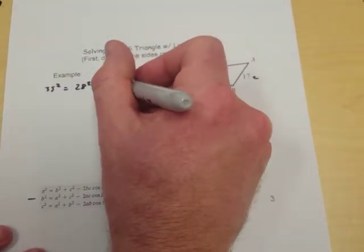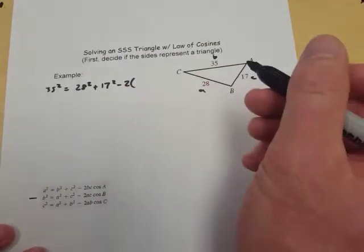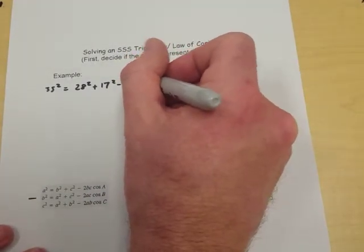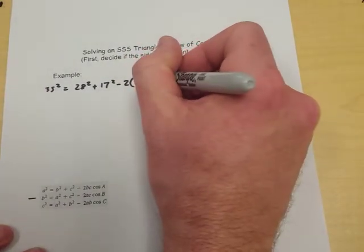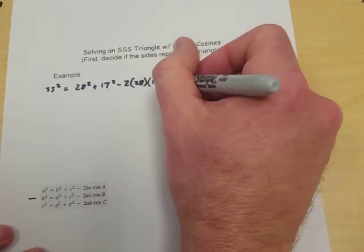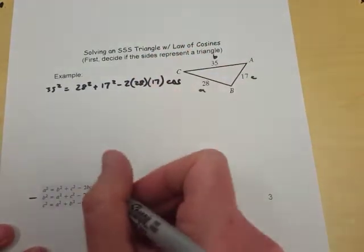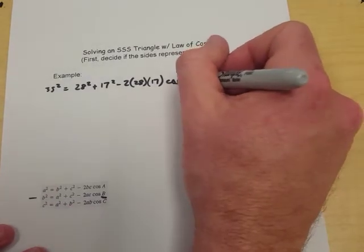and then minus 2 times A times C cosine. The one I'm looking for, and that's B in this case, it's the one that I chose.